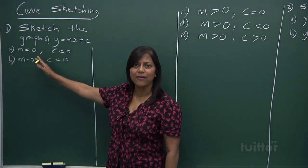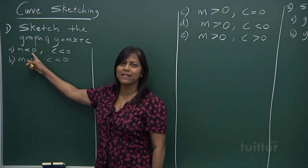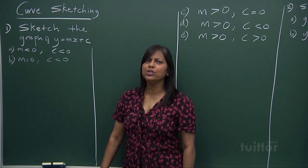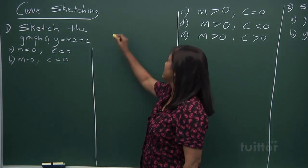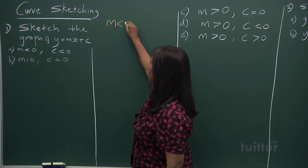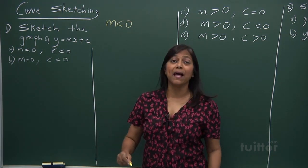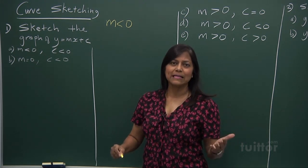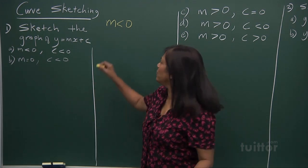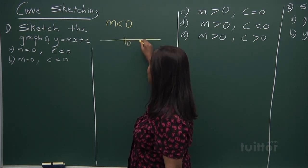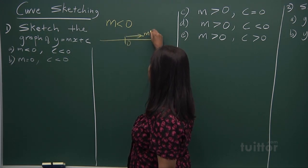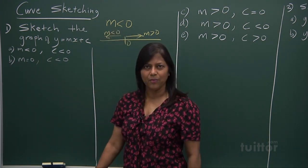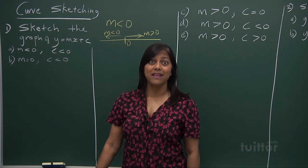If we ask you a question like this — how would you sketch a graph where m is less than 0 and c is less than 0? How do you interpret m less than 0? Well, m less than 0 on a number line means smaller than 0, for example minus 1, minus 2. On a number line, going one way m is greater than 0, and going the other way m is less than 0. So this shows that there is a negative gradient.